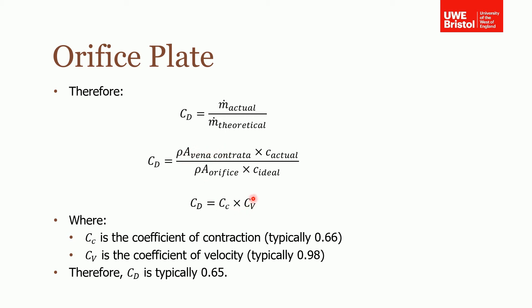This means that we can break this up into two terms. We can look at CV which is the actual velocity divided by the ideal velocity and this is a coefficient of velocity, which is typically 0.98, similar to that of a Venturi.